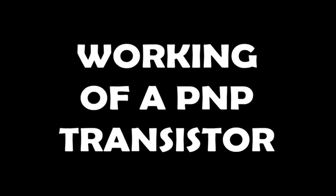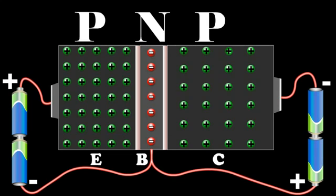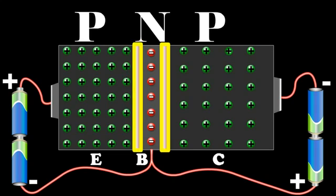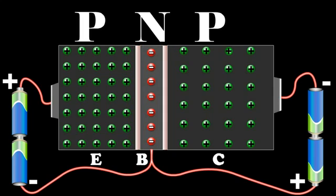Explain the working of a PNP transistor. Now let us see the construction. A PNP transistor is like two PN junction diodes which are placed back to back. At each junction there is a depletion region which gives rise to a potential barrier.